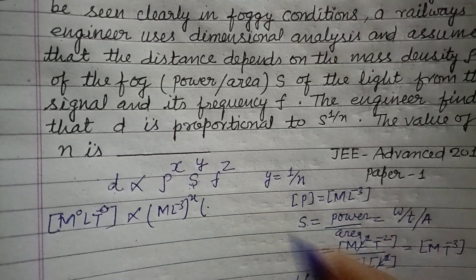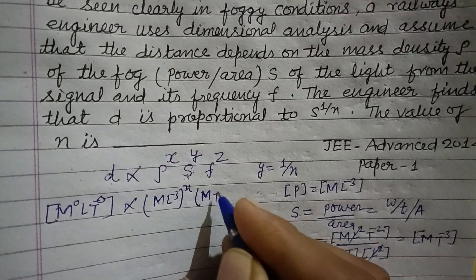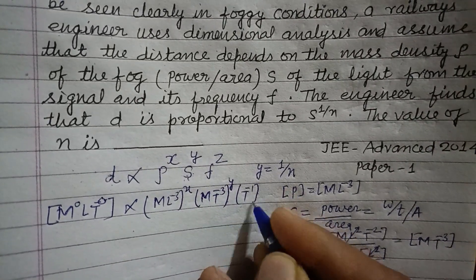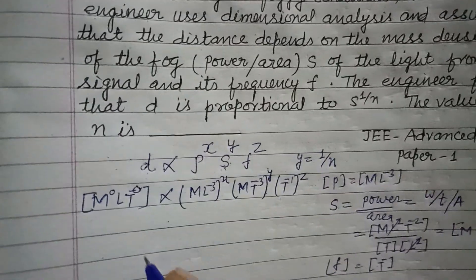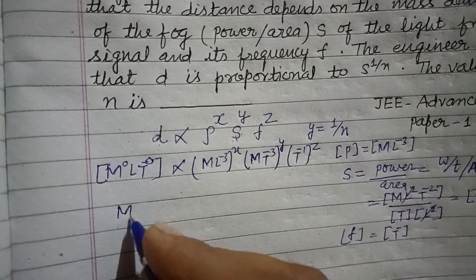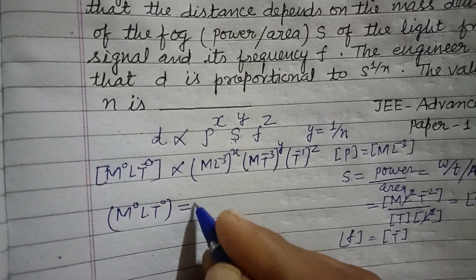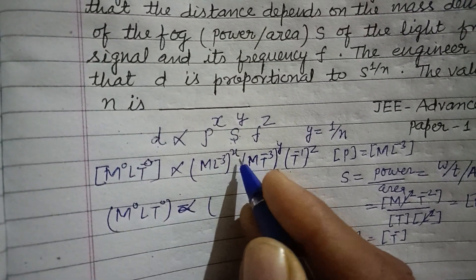Dimension of distance equal to MT^-3 to the power y, and dimension of frequency T to the power minus 1 is z. So M^0L^1T^0 equal to proportional to M to the power x plus y from here.